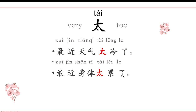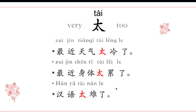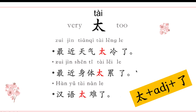最近身体太累了 — 身体 means body or health condition. So 最近身体太累了 means 'I'm very tired, I'm too tired recently.' Another example: 汉语太难了 — Chinese is very difficult, it's too difficult. Do you think so? So we use: 太 + adjective + 了. We put the adjective in the middle. We can't use 太 alone — 太冷 is not right; 太冷了 is right.